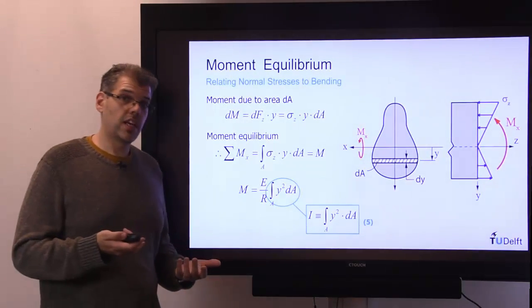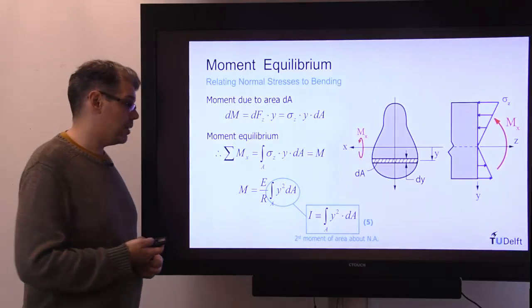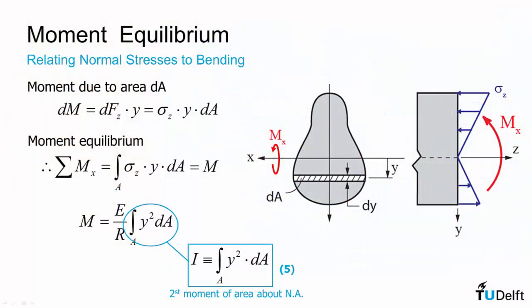This should also be familiar from your statics course, because it is the second moment of area about the neutral axis. Okay, and we denote this by the capital letter I. If we substitute in the notation I for the second moment of area, we can get the equation that m over i is equal to e over r.